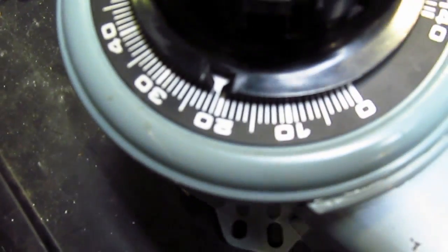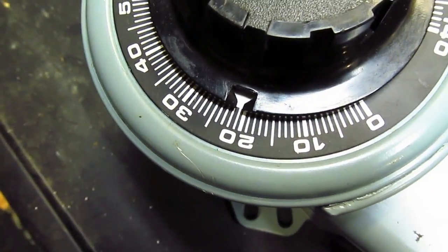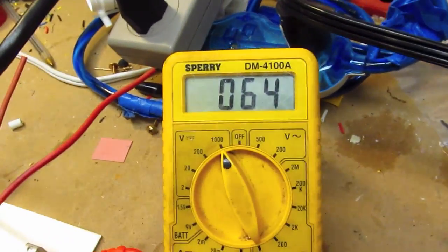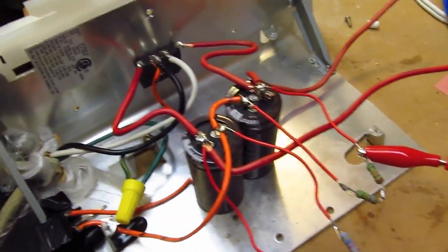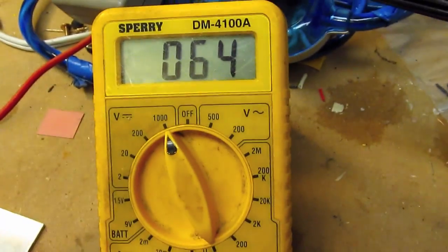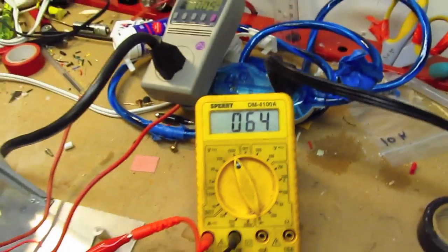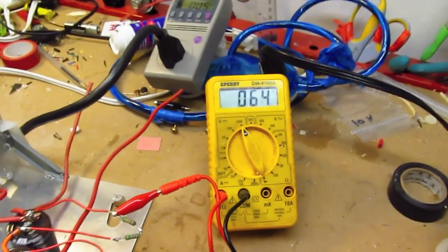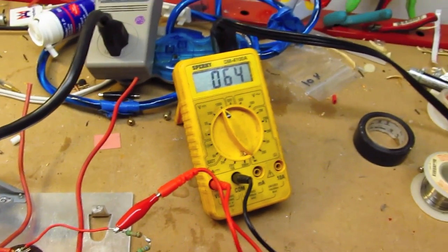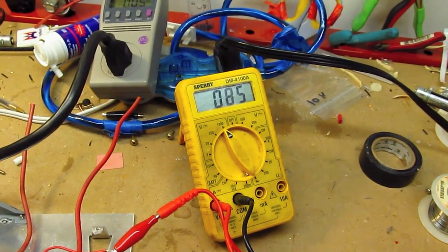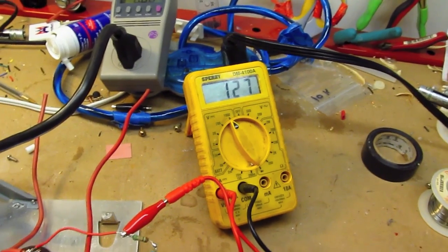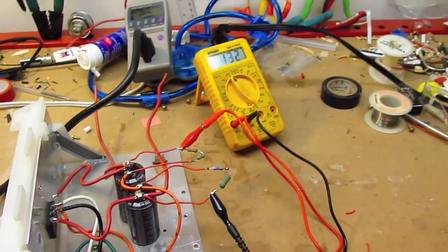Variac is sitting at 20 volts AC, maybe 21 volts, and this voltage doubler is spitting out 64 volts DC. That appears to be successful. I think I'm going to continue ramping that up, just to see what happens.